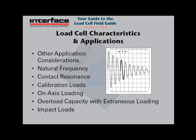Also in this chapter, we talk about overload capacity with the additional consideration of any potential extraneous loads. We typically recommend keeping the force applied as axial as possible, but oftentimes in an application there is going to be some sort of extraneous loading applied to the cell. It discusses how the overload capacity of the cell is affected by those extraneous loads, to make sure you're able to correctly rate the capacity of the cell for the application to avoid damaging it. We also talk about impact loading applications, and how to rate the load cell so it is appropriate for the amount of force applied in an impact loading application.